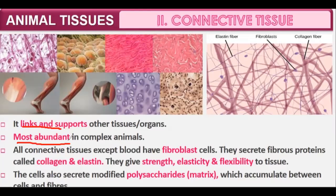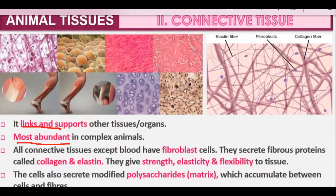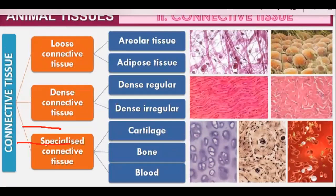Fibroblast cells secrete fibrous proteins called collagen and elastin, which give strength, elasticity, and flexibility to the tissue. The cells also secrete modified polysaccharides that accumulate between cells and fibres, forming a matrix.